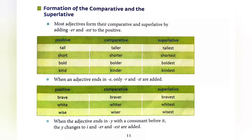When an adjective ends in E, only R and ST are added. For example, brave — comparative में braver हो जाएगा और superlative में bravest हो जाएगा.